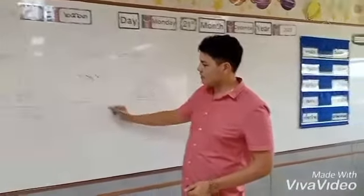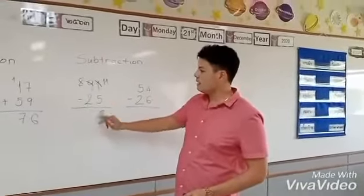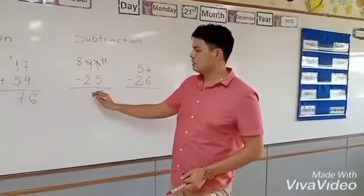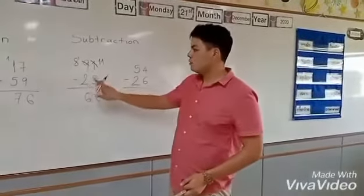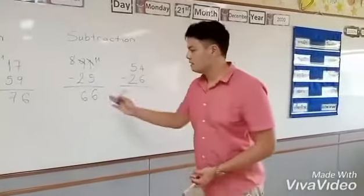Now you can look at 11 minus 5 equals 6, and 8 minus 2 equals 6. So 91 minus 25 equals 66.